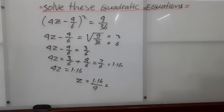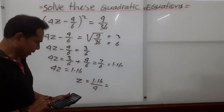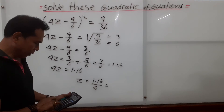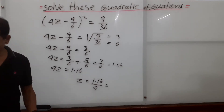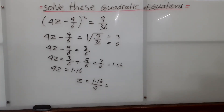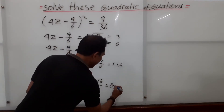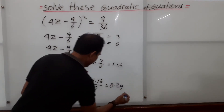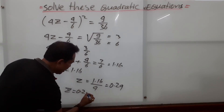Let's use our calculator to make it faster. 1.16 divided by 4 gives us 0.29. So z equals 0.29.